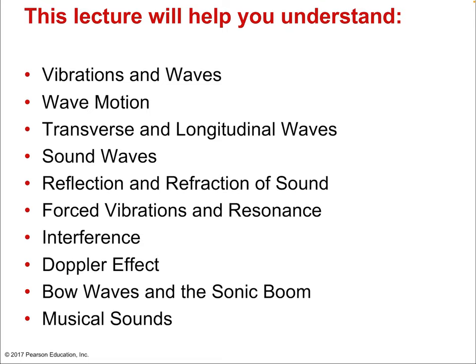We'll define waves, starting with vibrations and waves, where waves come from, and wave motion. Then we'll talk about the two types of waves: transverse and longitudinal waves. Longitudinal waves — those are sound waves. Transverse waves — that's light. There are also other important transverse waves like stringed instruments such as a violin, and ocean waves. So there are actually more transverse waves than longitudinal, but we have great examples of both.